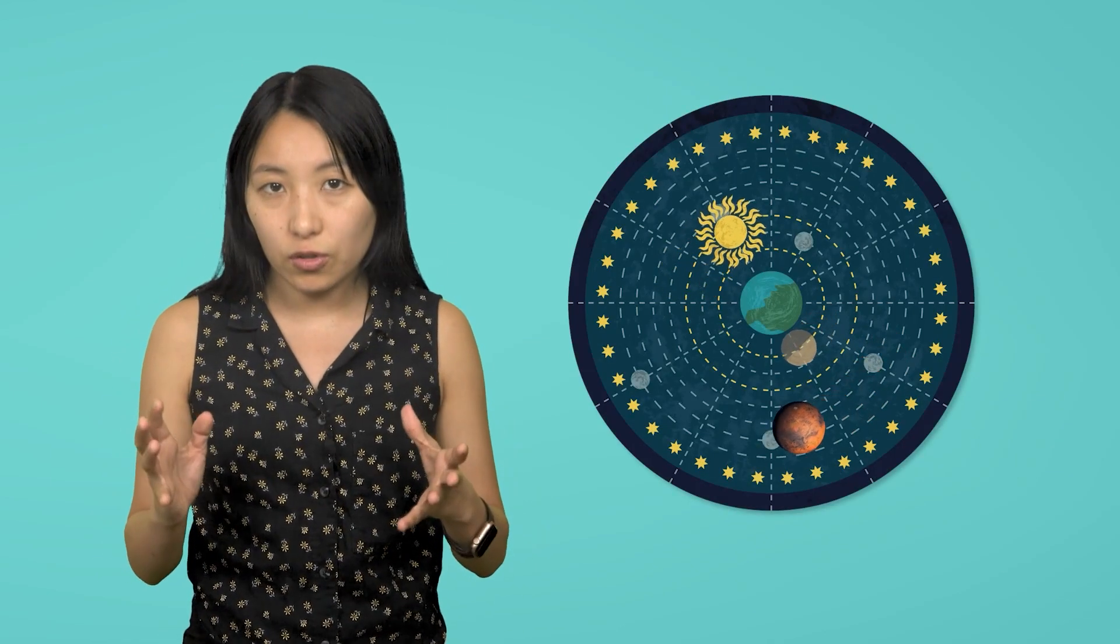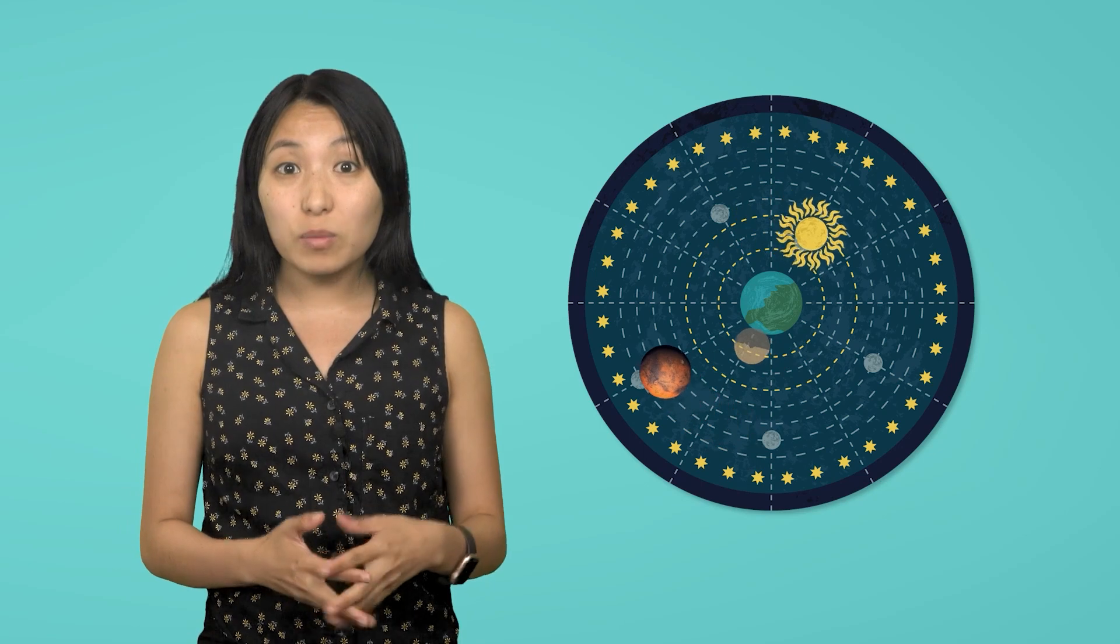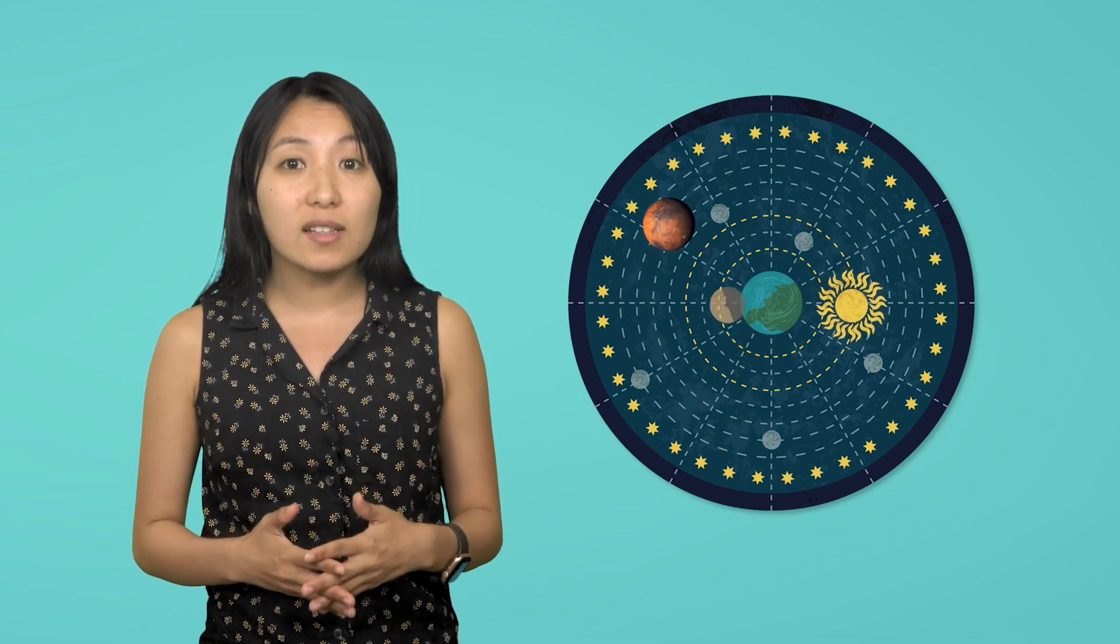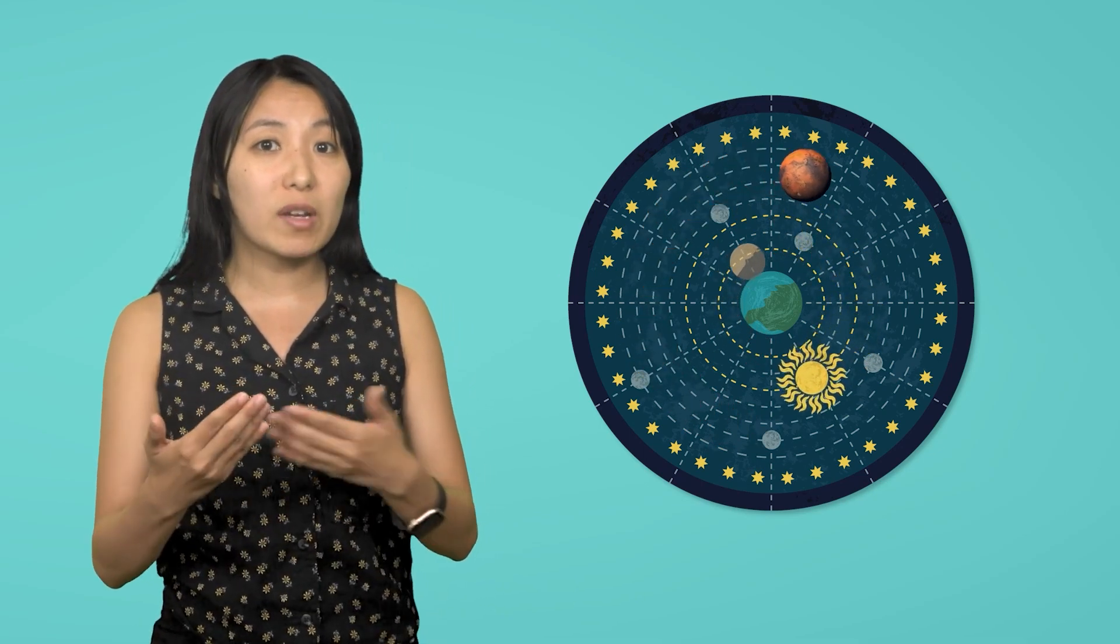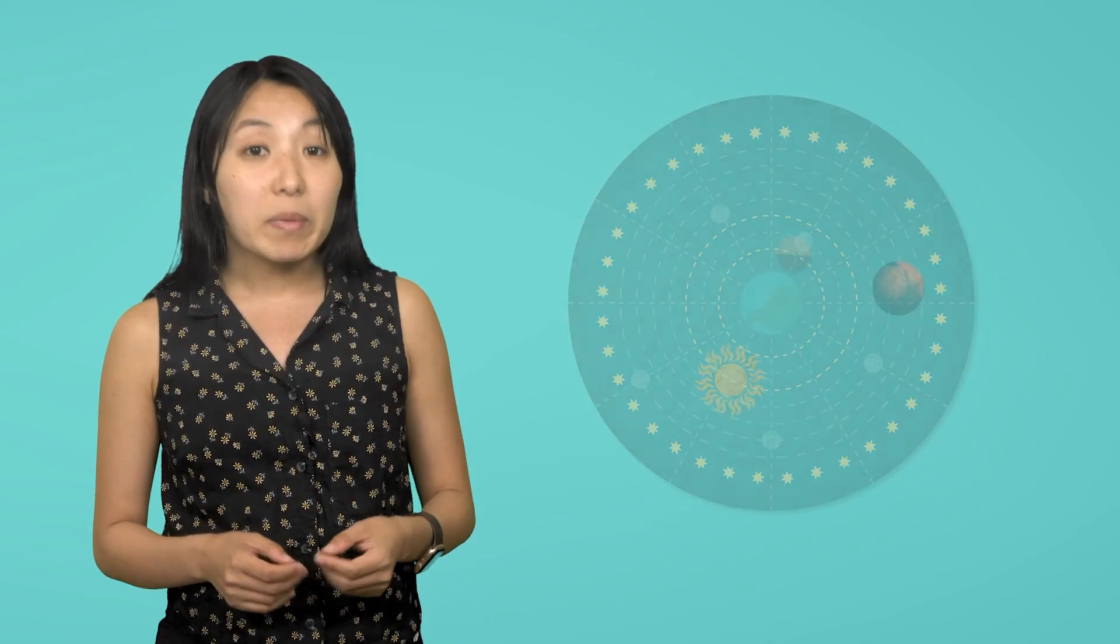If Mars were moving around Earth in a perfect circle, then it should always appear to be the same size and brightness in the sky since its distance from us wouldn't change. But because it varies in how big and bright it looks, astronomers realized that Aristotle's simple geocentric model couldn't be right.